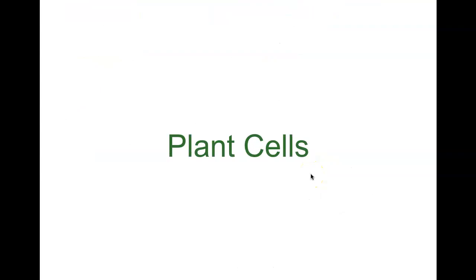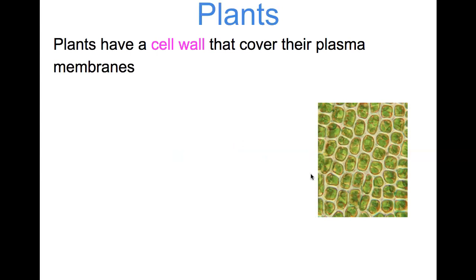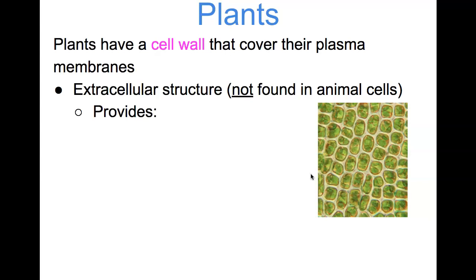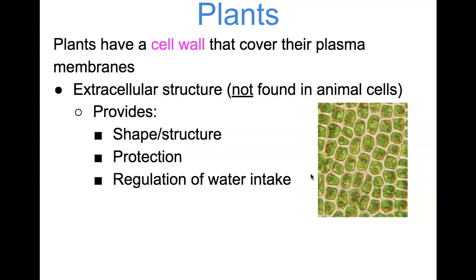Let's take a look at the plant cell. Plant cells have a cell wall that covers their plasma membrane. Animal cells do not have that cell wall. The extracellular structure is not found in animal cells, and basically what it does for the plant, it's going to provide shape and structure. It's going to be a source of protection for plant cells, and it's going to regulate water intake by the plant.